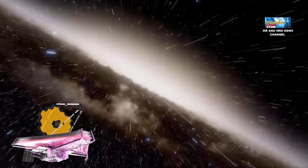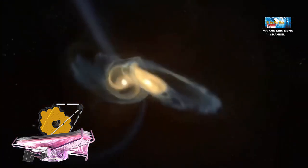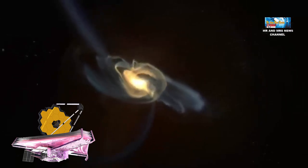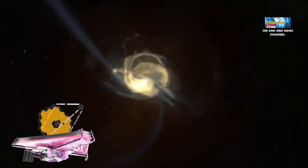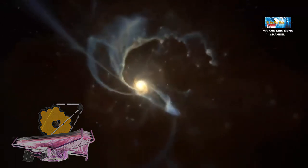Teleskop luar angkasa James Webb telah menangkap dua galaksi yang bertabrakan. Di tengah pentelokan kosmik ini, para peneliti telah menemukan sesuatu yang tidak terduga. Tampaknya tidak ada lubang hitam supermasif aktif di kedua galaksi.